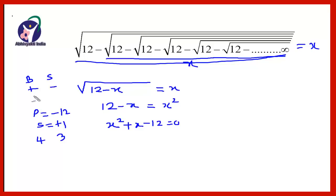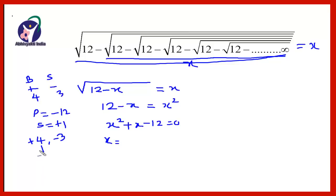The bigger number is 4, so it gets the plus sign and the smaller number 3 gets the minus sign. The two numbers are plus 4 and minus 3. Writing it out: x squared plus 4x minus 3x minus 12 equals 0. By taking the common factor and solving, we find the value of x. The values of x are minus 4 and plus 3. We reject the negative number and take x equals 3.